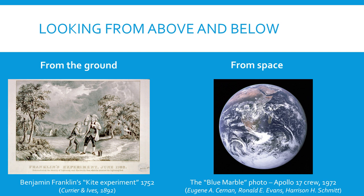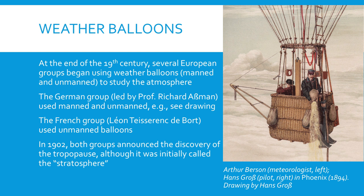Weather balloons have a history going back to the late 19th century. On the cusp of the 19th and 20th centuries, several European groups started using both manned and unmanned weather balloons. Independently, both the French group using unmanned balloons and the German group, in 1902, discovered what we now call the tropopause — though they initially called it the stratosphere.